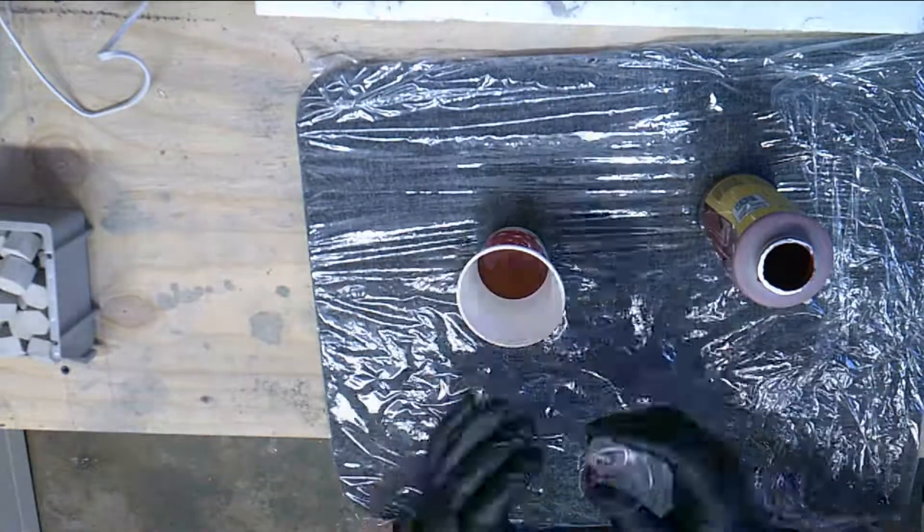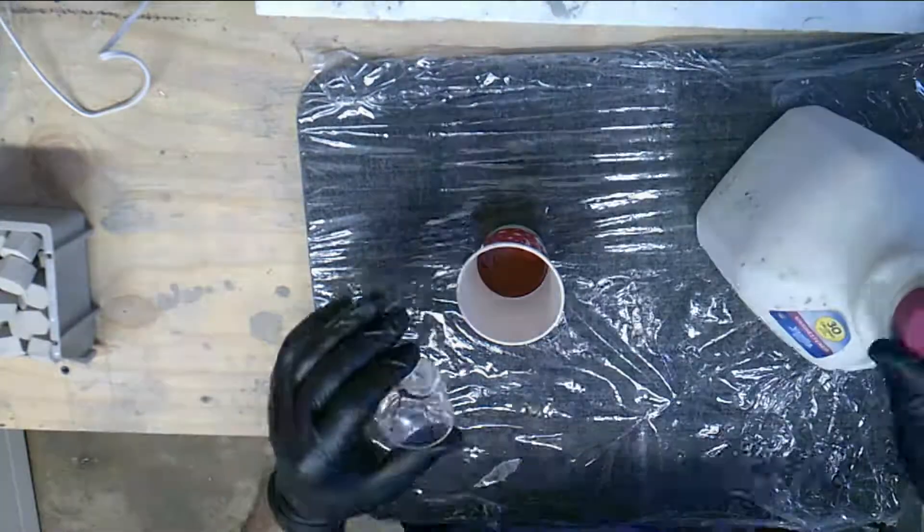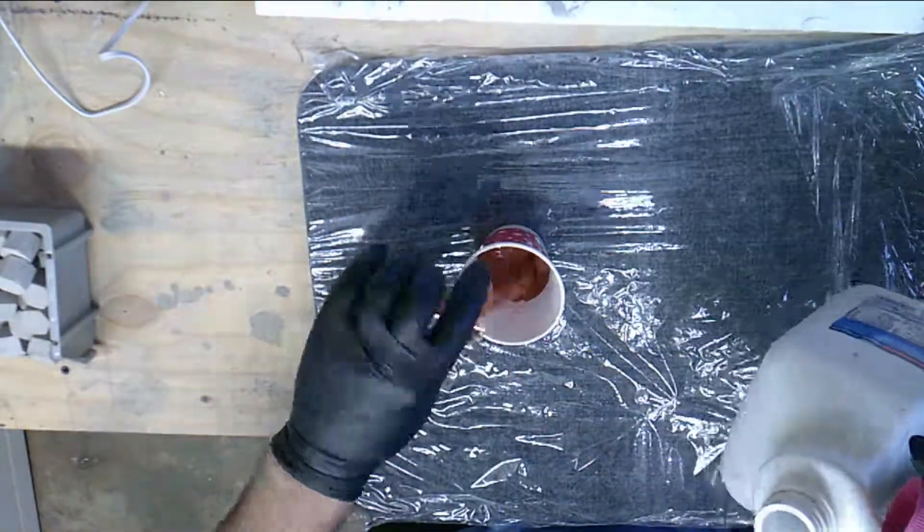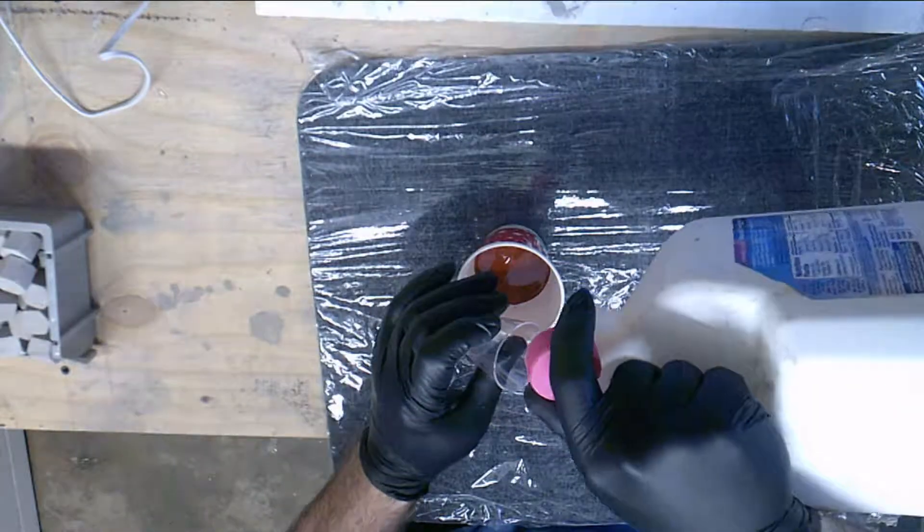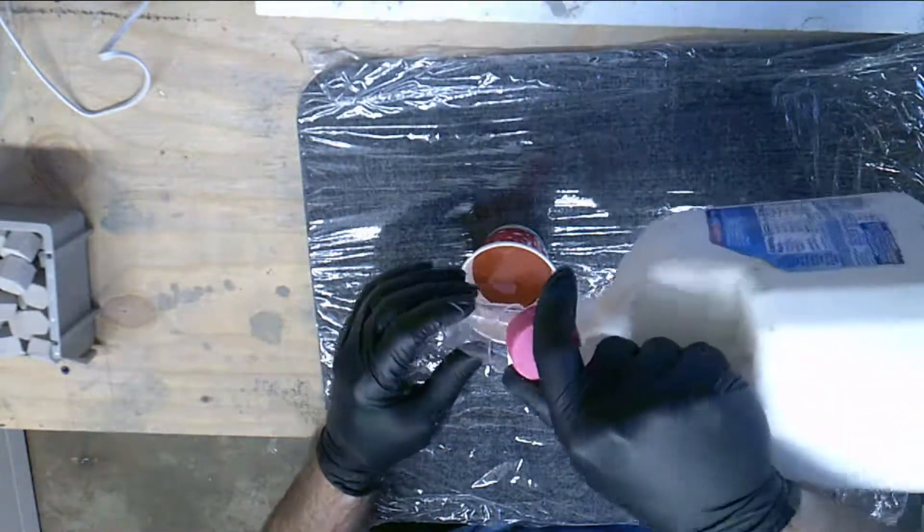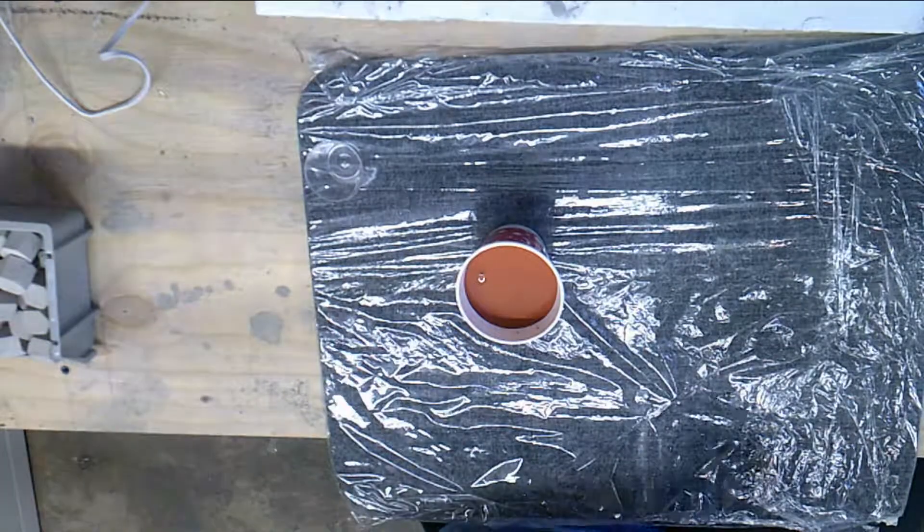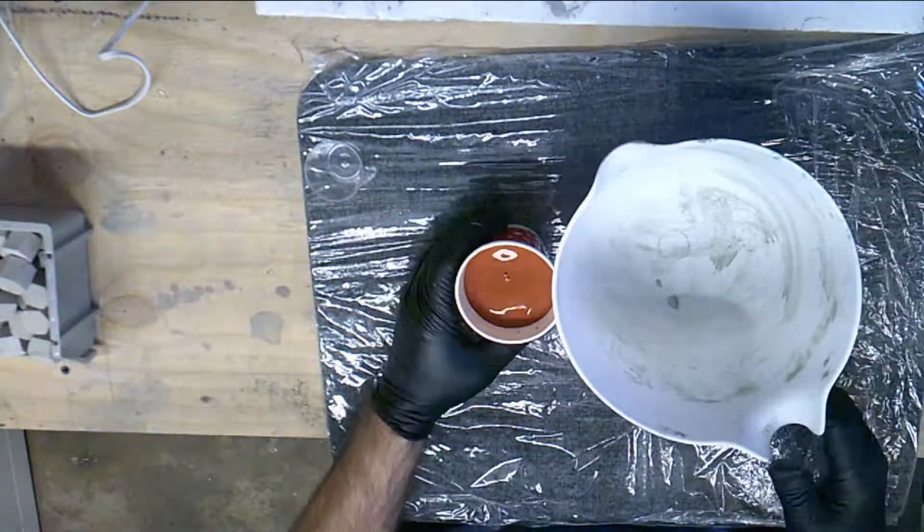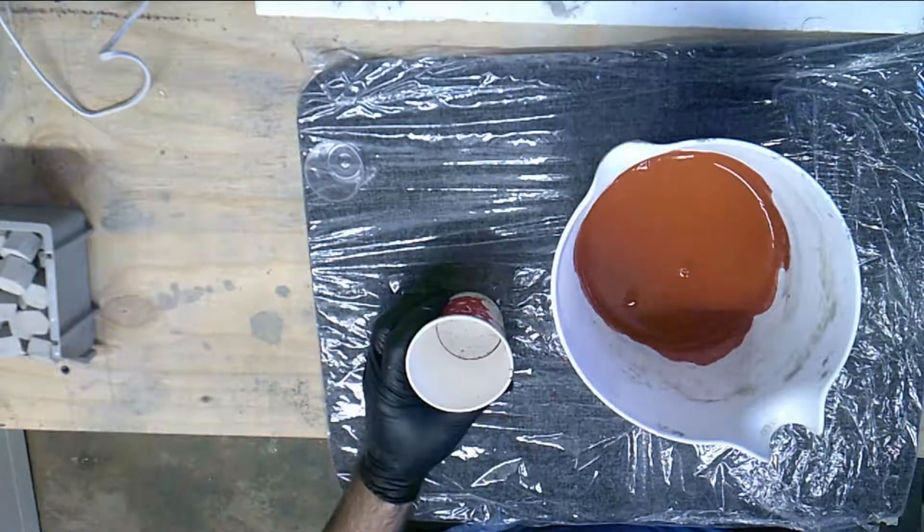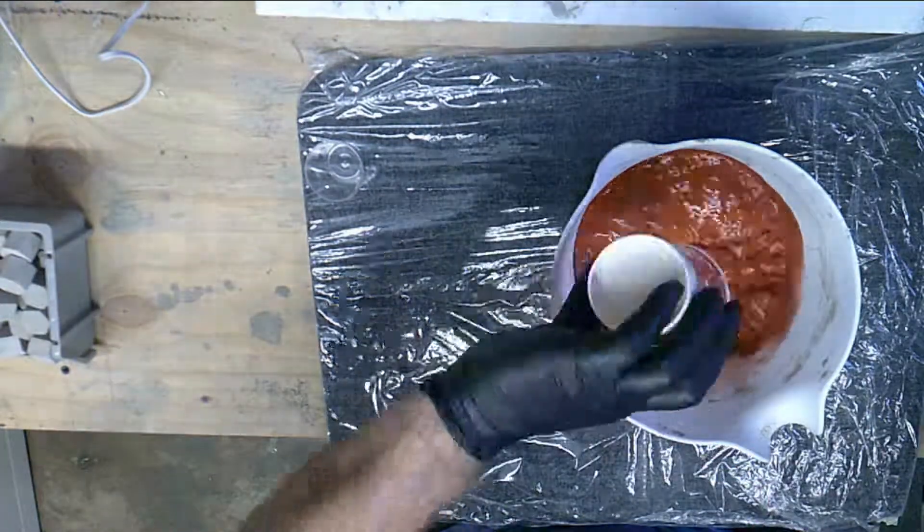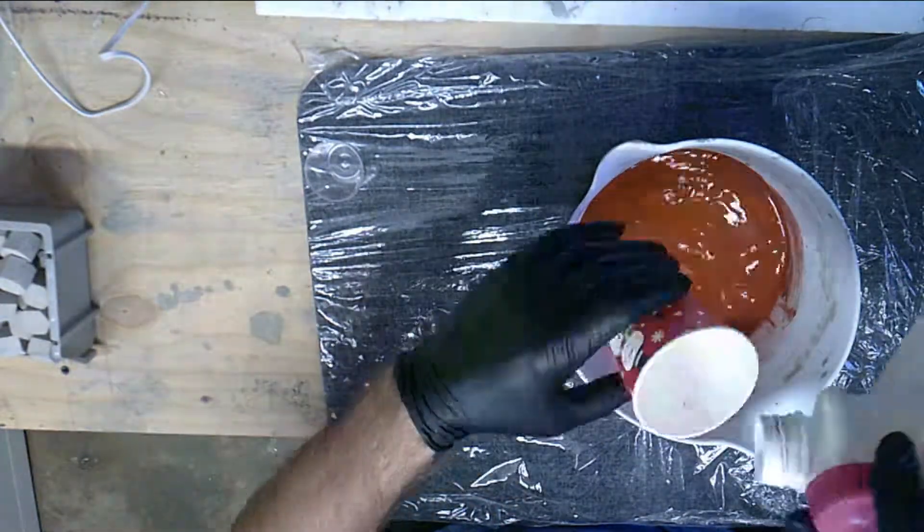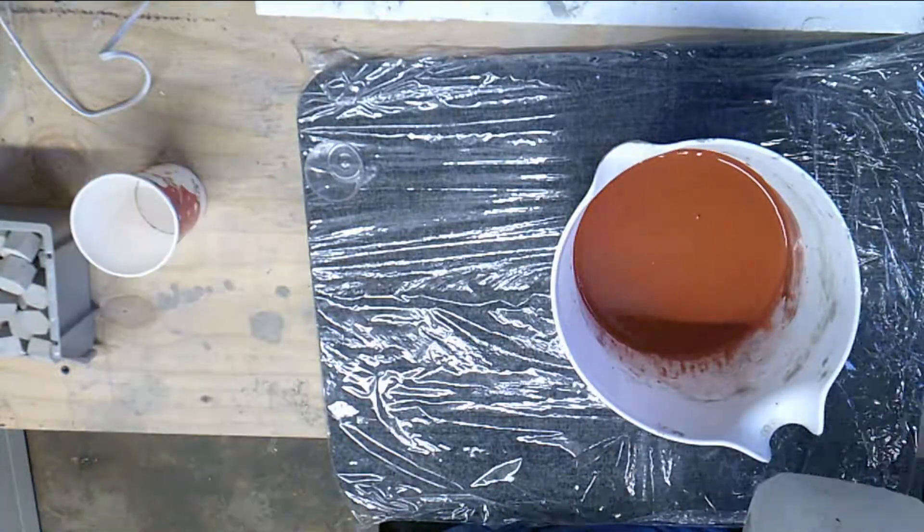We mix the coloring with the water first, making sure to mix it completely. It is a good idea to make a note of how much coloring you use, in case you need to match some blocks in the future. This coloring goes a long way. I am mixing one half of a plastic shot glass per two cups of water. I try to rinse out the cups to get all the coloring as I go.